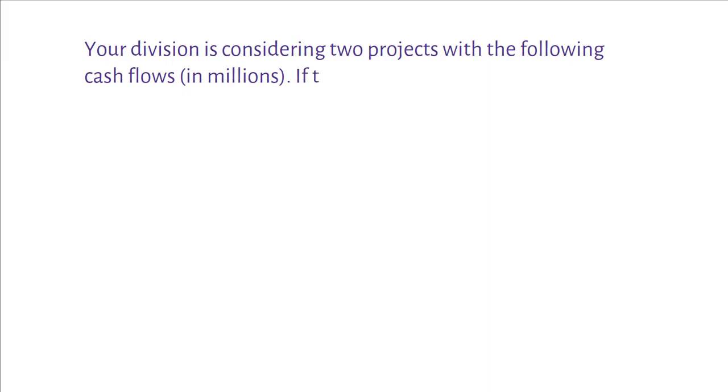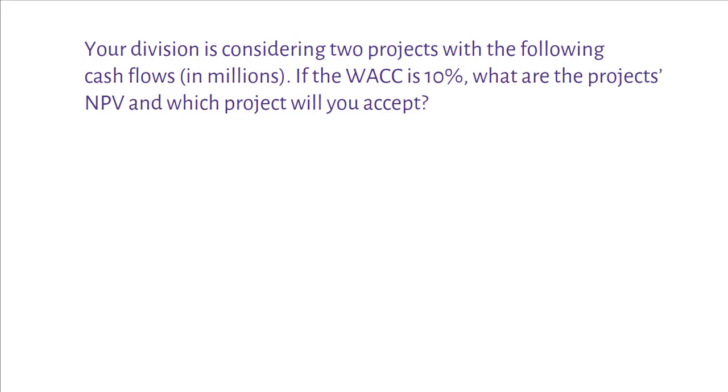Here is an example. Your division is considering two projects with the following cash flows in millions. If the WACC is 10%, what are the projects' NPV and which project will you accept?